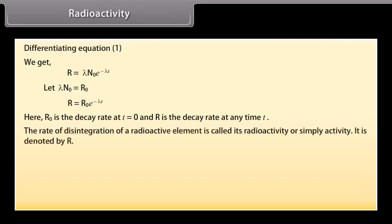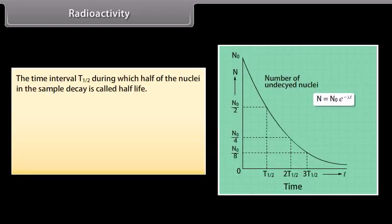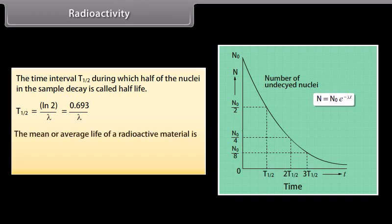The rate of disintegration of a radioactive element is called its radioactivity or simply activity, denoted by R. Activity can be expressed as R = Nλ. The SI unit for activity is becquerel: 1 Bq = 1 decay per second. The time interval T½ during which half of the nuclei in the sample decay is called half-life: T½ = ln2/λ = 0.693/λ. The mean or average life of a radioactive material is τ = 1/λ.